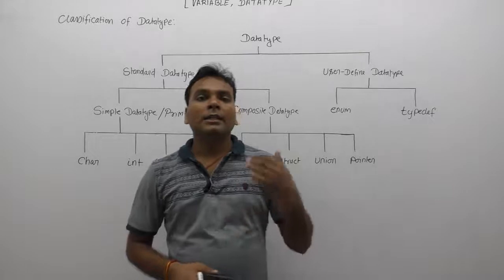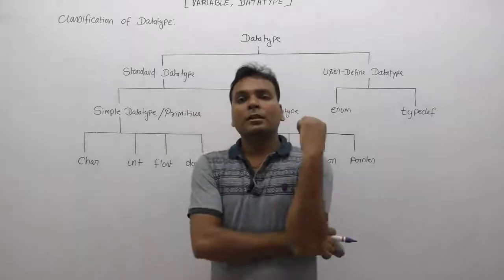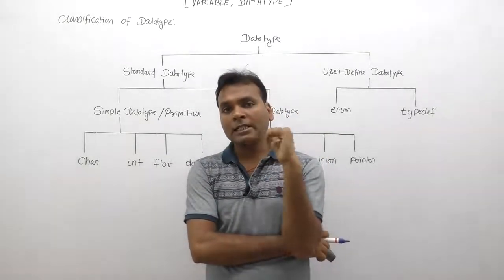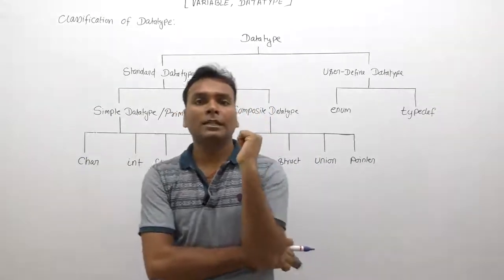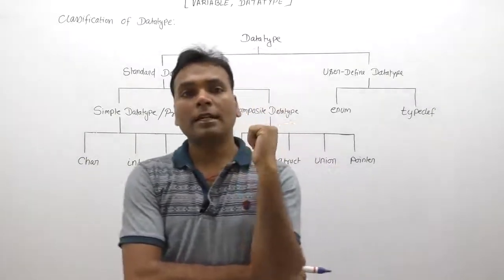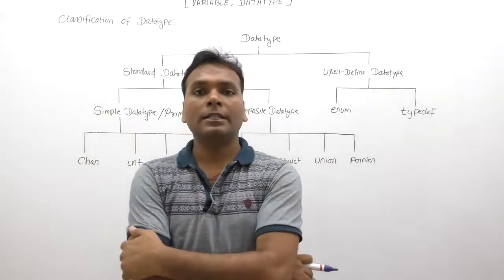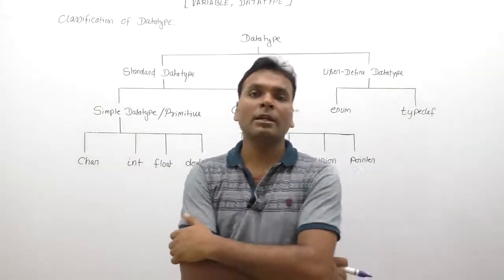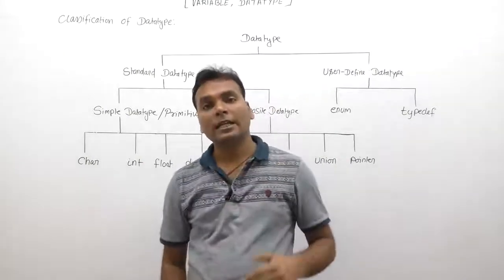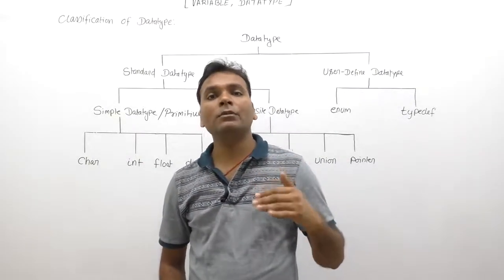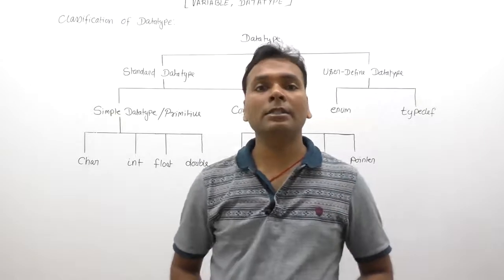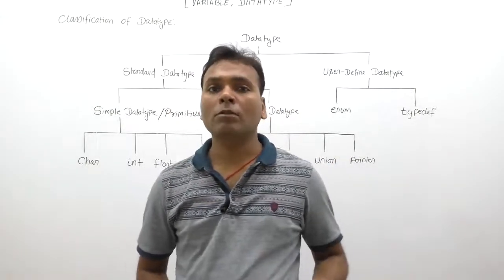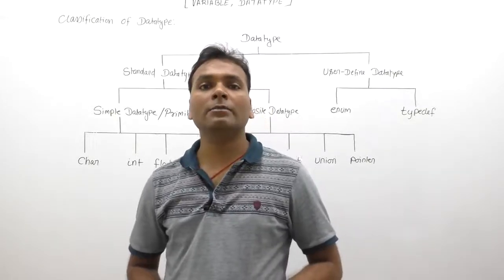How many data types are available in C language? In C language, at the initial level, data types are divided into two parts. There are two types of data types available in C: standard data types and user-defined data types. Standard types means they are already predefined — data types which are available in C by default, already existing data types in C.